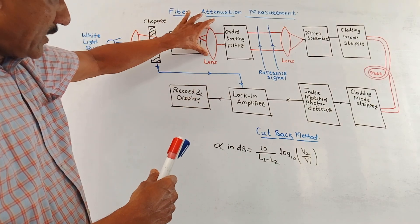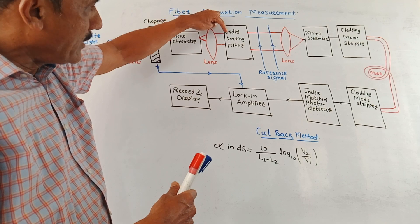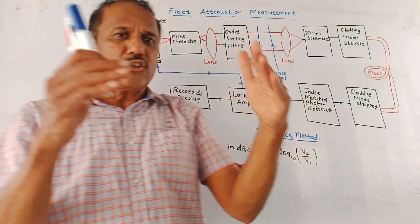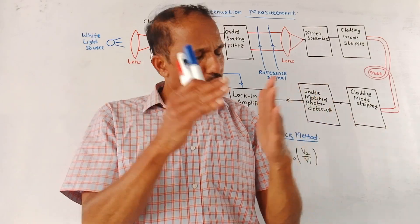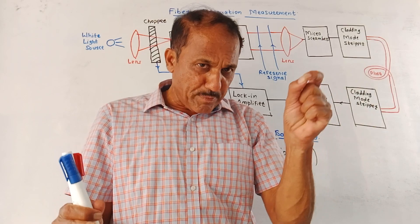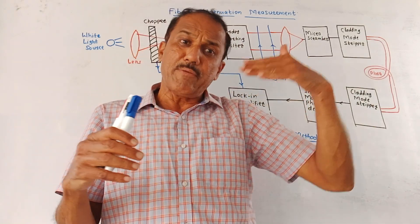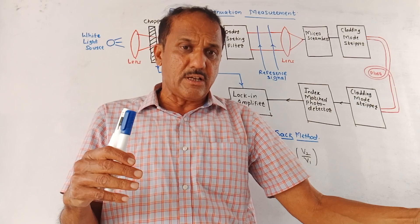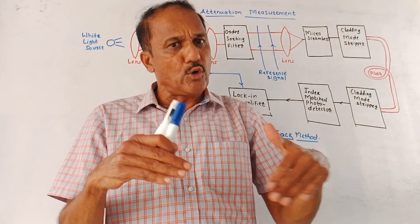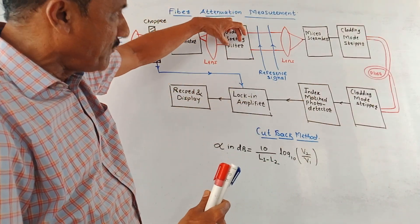Then again we are making use of a lens, and its output is given to the order sorting filter. This block is especially required in case of multi-mode fibers. In multi-mode fibers there are many modes, and if we choose higher order modes there may be fluctuations in the output. So we want to block higher order modes and select only lower order modes. This is done by the order sorting filter.